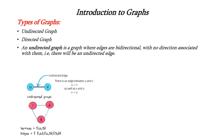We can either consider it from U to V or V to U. This is the example of an undirected graph. We have three vertices and three edge pairs. You can write them as (1,2), (2,3) or (3,1). We can also write them the other way as (2,1), (3,2) and (1,3).